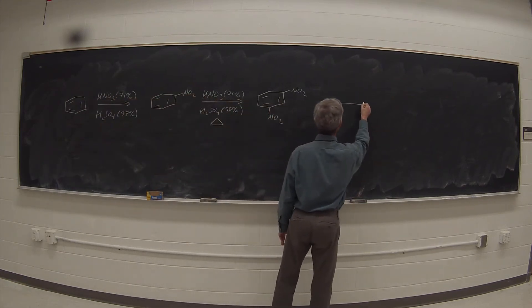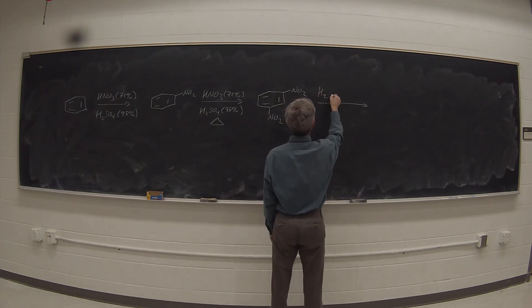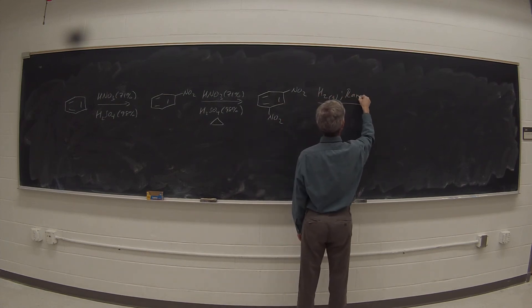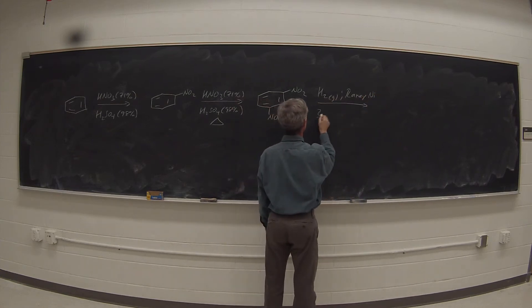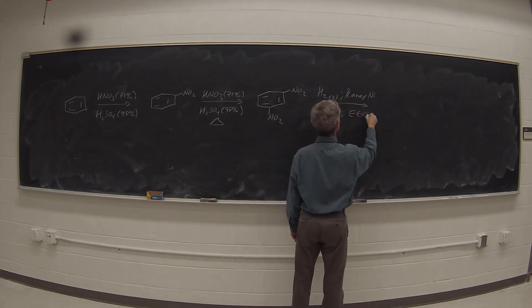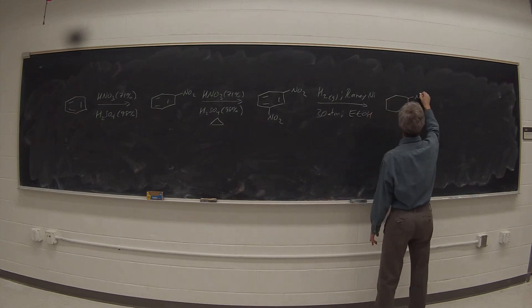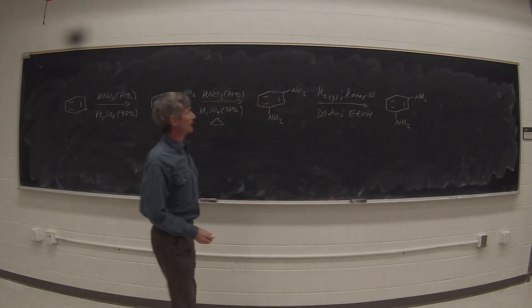Now we want to reduce those nitro groups to the corresponding amino groups. This time, let's use hydrogen gas and Raney nickel. That's an excellent way to do this. At 30 atmospheres and an alcohol solvent, often ethanol. And then we can convert that to 1,3-diaminobenzene.